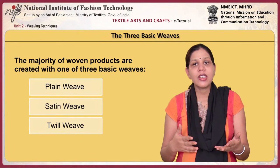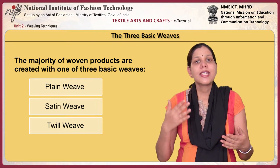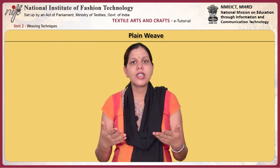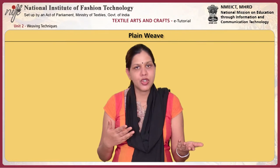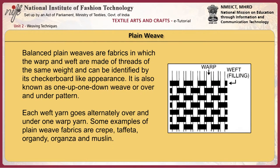The majority of woven products are created with one of three basic weaves: plain weave, satin weave or twill weave. Plain weave, also called tabby weave or taffeta weave, is the most basic of the three fundamental types of textile weaves. It is the simplest, most common and inexpensive type of construction, producing a durable, flat and tight surface. It is conducive to printing and other finishes. Balanced plain weaves have warp and weft made of threads of the same weight, identifiable by its checkerboard-like appearance, also known as the one-up one-down or over-and-under pattern. Each weft yarn goes alternately over and under one warp yarn. Some examples of plain weave fabrics are crepe, taffeta, organdy, organza and muslin.